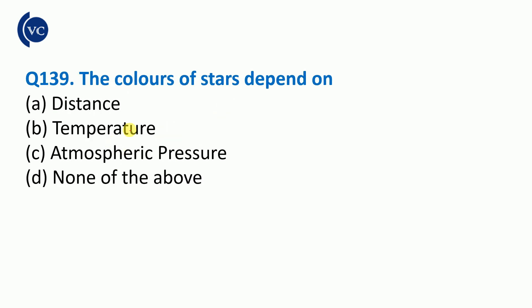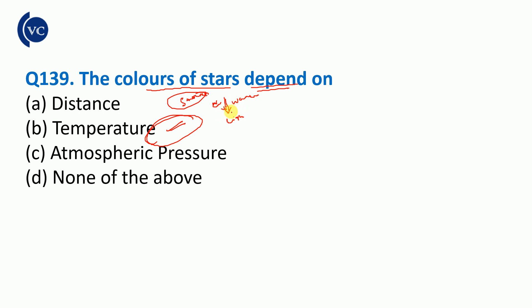The next question: the color of the stars. The stars have different colors. Where do they depend? They depend on the temperature. The temperature of the stars determines their color. If stars are cold, they appear light and reddish. If the temperature is higher and dark, and if it is very hot, we will see the stars as white or blue-white.